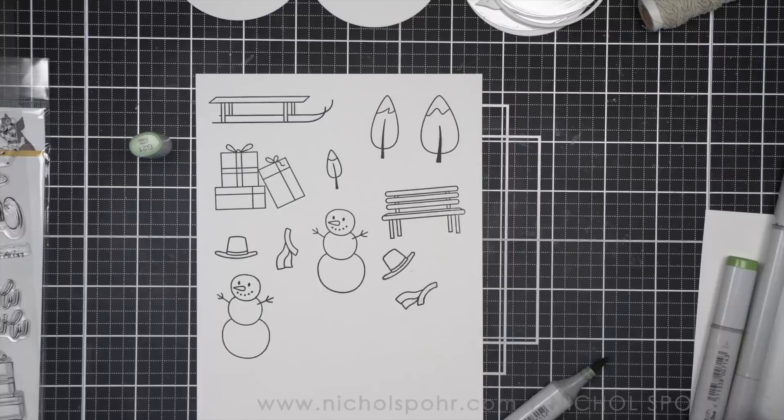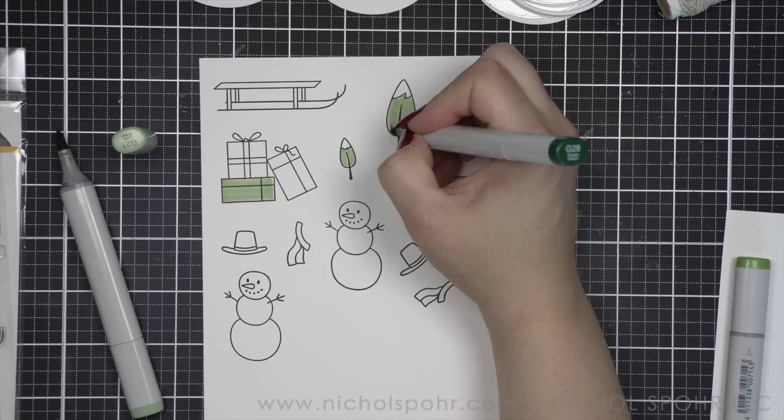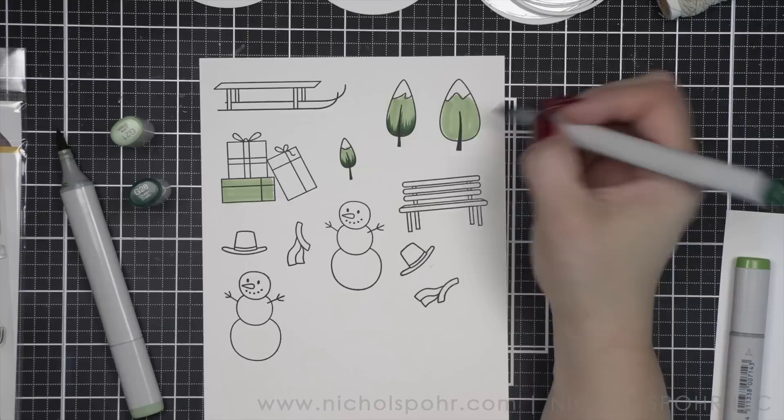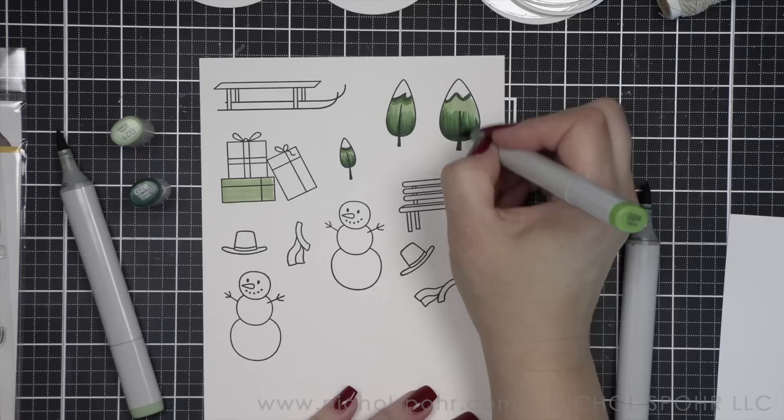With my stamped little images here from the Warm Wishes set, I am going to simply color in all the images I stamped here. I have three trees, the packages, the sled, a bench, two snowmen, two hats, and two scarves. I'm going to be building three little mini scenes.